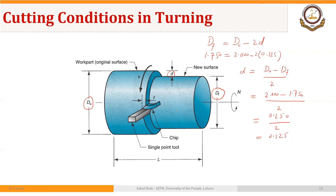An important machining parameter in turning is the feed. Feed is the linear travel of the cutting tool along the length of the workpiece per revolution of the workpiece, expressed in inches per revolution. You can see this diagrammatically — the linear travel of the cutting tool along the axis of the workpiece.